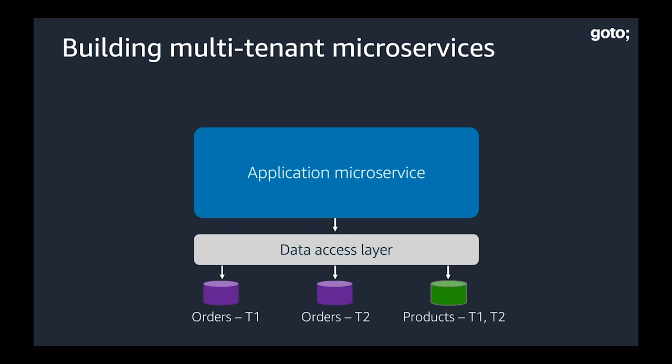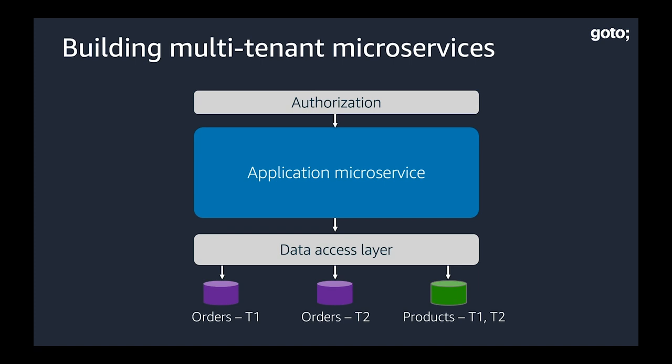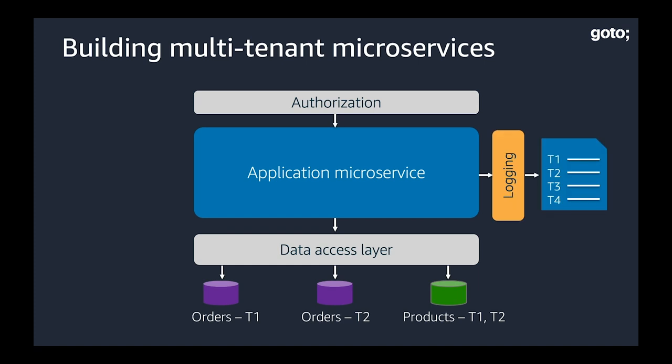That same model applies as we look at authorization on the way into the service — whatever context is in that token will be used to authorize your ability to execute this microservice and will be applied there. We also see this in logging. A lot of people think we just have logging and we'll log from the microservice like we normally would, however in a multi-tenant environment we have to log with tenant context. We have to inject that tenant ID into all of our log statements so that when we're troubleshooting we can look at these logs through the lens of individual tenants. Here again we'll take that token and have our logging library look at that token and inject that tenant context for us.